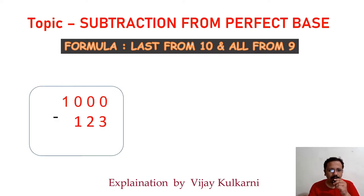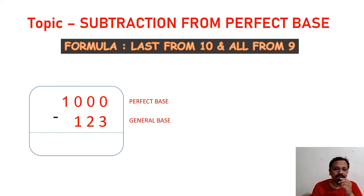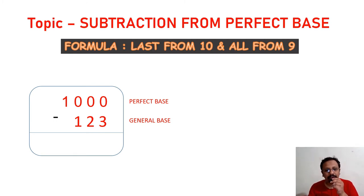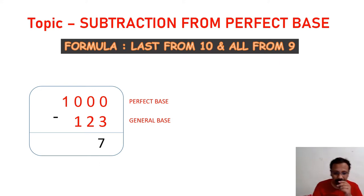Let's go with a suitable example: 1000 minus 123. Here 1000 is the perfect base and 123 is the general base. Write this down in your notebook. Using the formula 'last from 10 and all from 9,' the complementary of 3 using base 10 is 7.